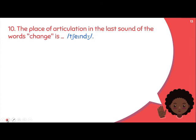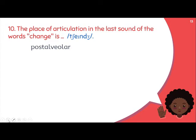Number ten: 'The place of articulation in the last sound of the word change.' Last sound — not first sound. The last sound of change is /dʒ/. The place of articulation for /dʒ/ is post-alveolar. You need to memorize these. I told you to study the night before taking the quiz, or you could open your notes since the exam was done from home.